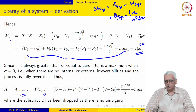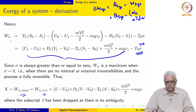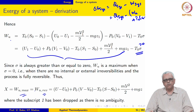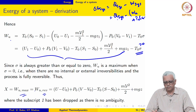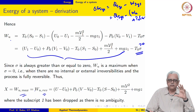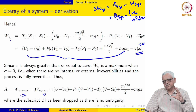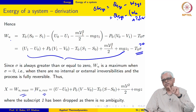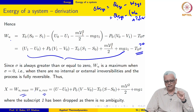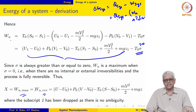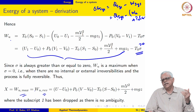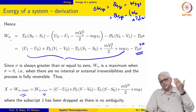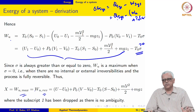That is just this portion of the expression for W_U. Exergy of the system at state 1 is equal to this — that is the maximum work, or reversible work, that may be developed as the system goes from state 1 to state 0. Once we have this definition of exergy X at state 1, the system can go from state 1 to state 0 in any process.